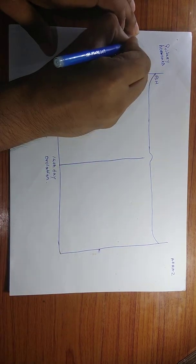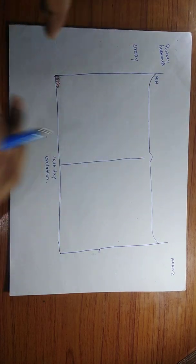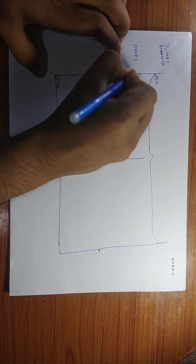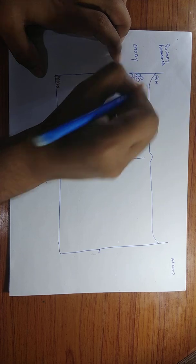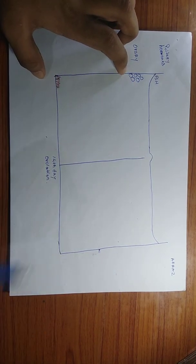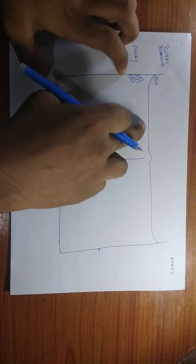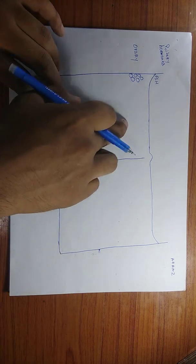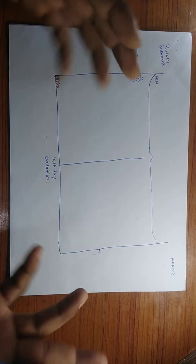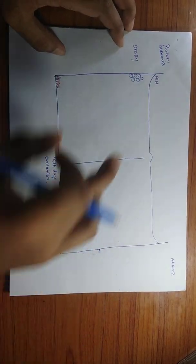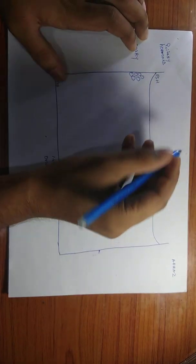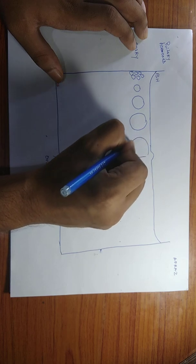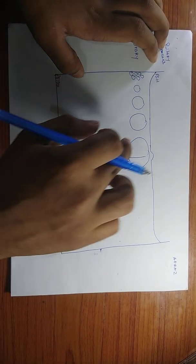Why do we need FSH? To stimulate the follicle. I'm drawing the ovary here. FSH causes the primordial follicles to become antral follicles — around six to seven are recruited. One is chosen as the dominant follicle. As FSH level comes down, the follicle with the maximum number of FSH receptors can still grow, while the lower FSH level prevents recruiting more follicles. That dominant follicle slowly grows bigger.